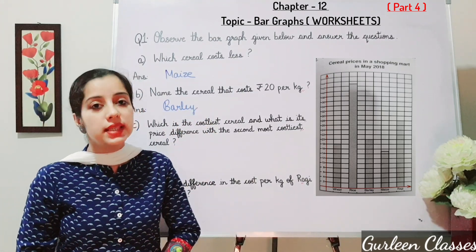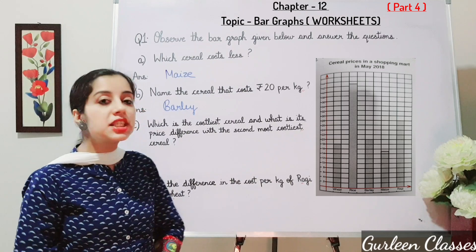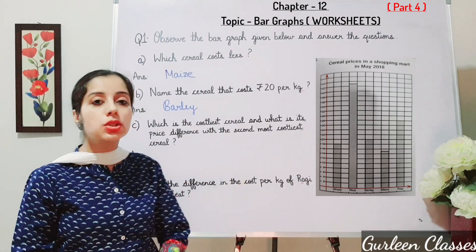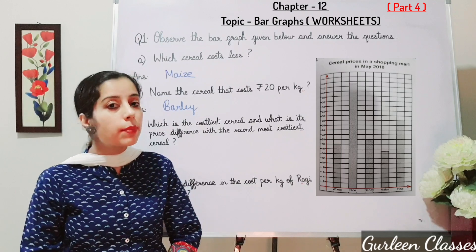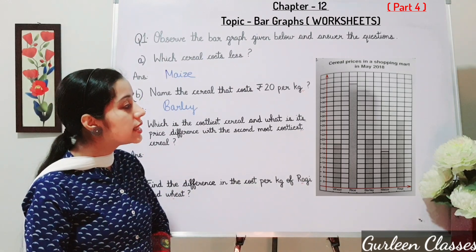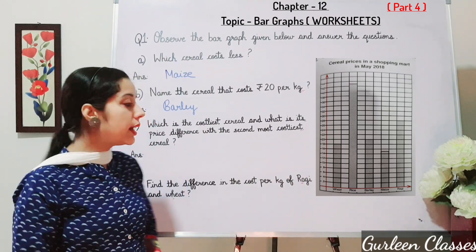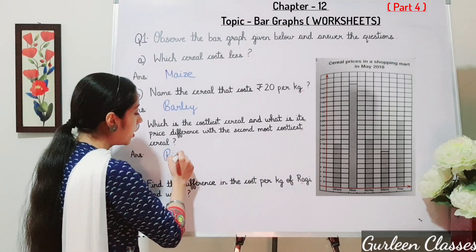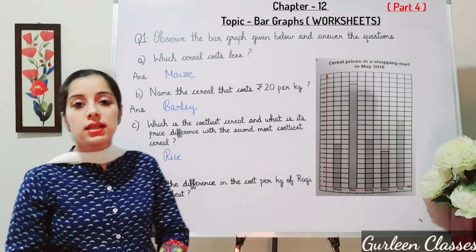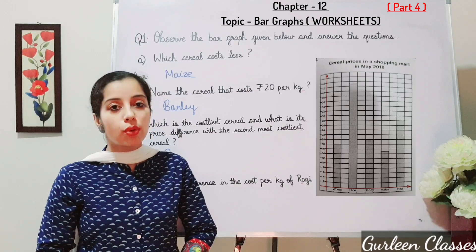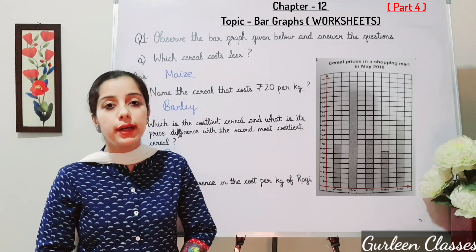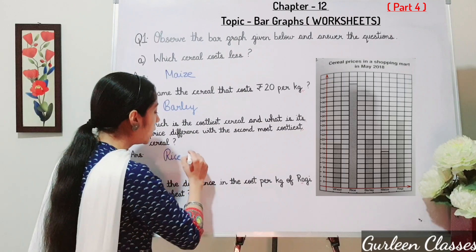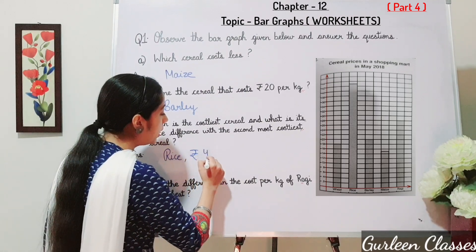Part C: which is the costliest cereal and what is its price difference with the second most costly cereal? By seeing the bar graph, the costliest cereal is Rice. Its cost is lying between 42 and 44, so it is rupees 43.